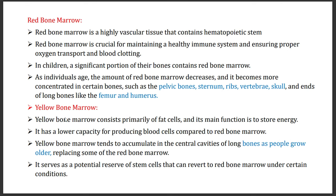Yellow bone marrow consists mostly of fat cells and is the main form of energy storage. It has lower capacity for producing blood cells compared to red bone marrow. Yellow bone marrow accumulates in the central cavities of long bones as people grow, replacing red bone marrow. Its main function is as a potential reserve of stem cells — when there is need for blood cells to form, yellow bone marrow can be converted to red bone marrow to produce blood cells.